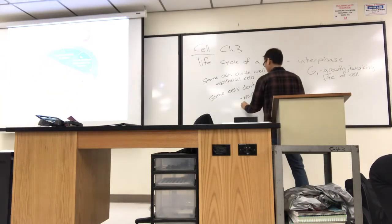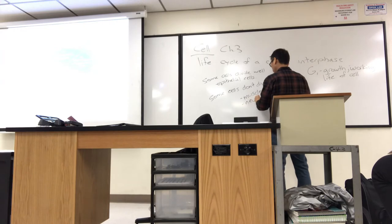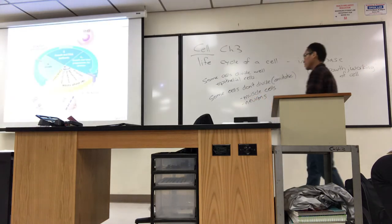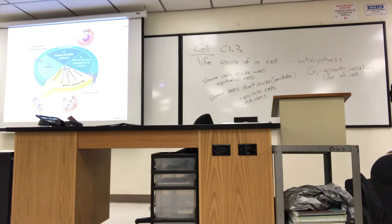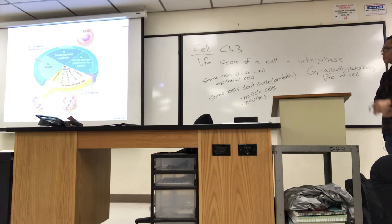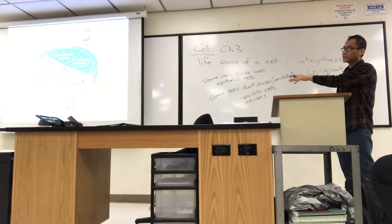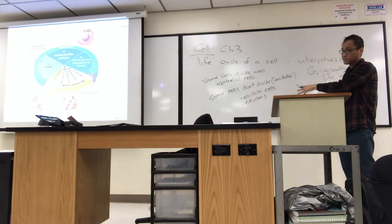Some neurons don't divide. That's why if you damage nerve cells, like for example, stroke in your brain or sever your spinal cord, they don't grow back if the cell bodies are damaged. If the cell bodies are damaged. So, I don't want you to think that all cells do that. I want you to realize some cells don't.